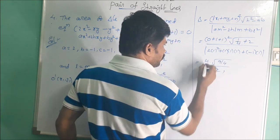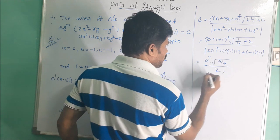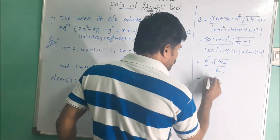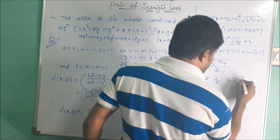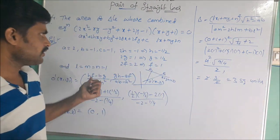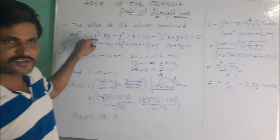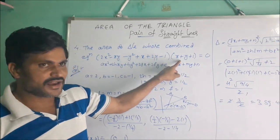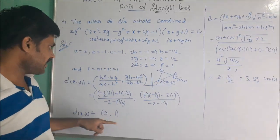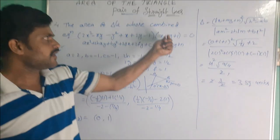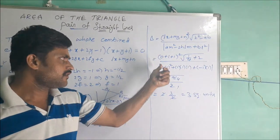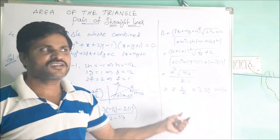Simplifying: Δ = 4 · (3/2) / 2 = 6/2 = 3. So the area is 3/2 square units. In this problem, the combined equation does not pass through the origin, so we first find the point of intersection (0, 1), substitute it into the given line, and then apply the area formula to get the answer.